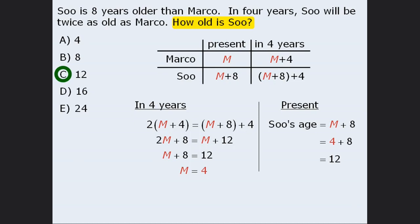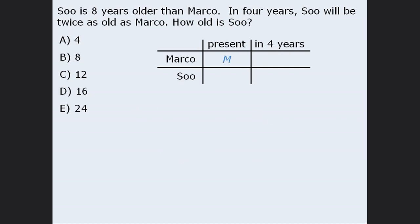Now let's solve the same question using two variables. We'll let M represent Marco's present age and S represent Sue's present age. In 4 years, Marco's age will be M plus 4, and Sue's age will be S plus 4. Now that we have completed our table using two variables, we need to use the given information to write two equations. Since Sue is 8 years older than Marco, we take Marco's age M and add 8, which means M plus 8 must equal S.